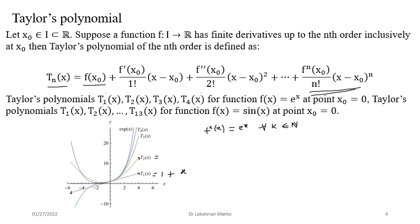Since we are finding the Taylor polynomial about zero, x₀ = 0. The second-degree Taylor polynomial is T₂ = 1 + x + x²/2!. The third-degree Taylor polynomial is T₃ = 1 + x + x²/2! + x³/3! = 1 + x + x²/2 + x³/6. Likewise, T₄ would be a biquadratic polynomial. These are the plots of various Taylor polynomials of the exponential function.